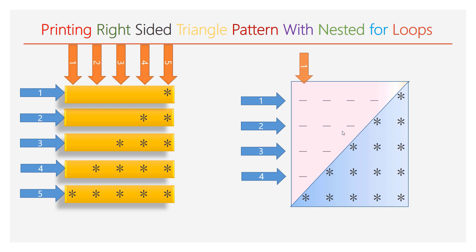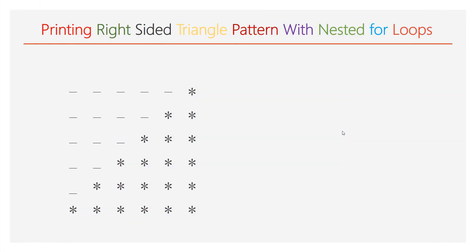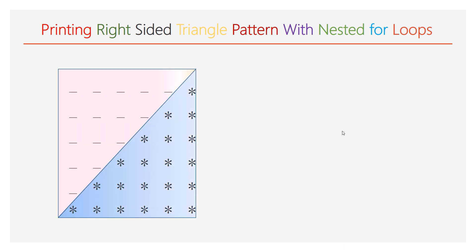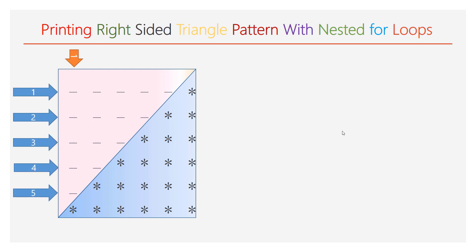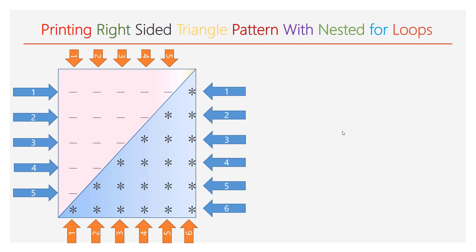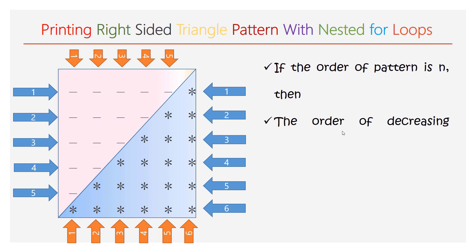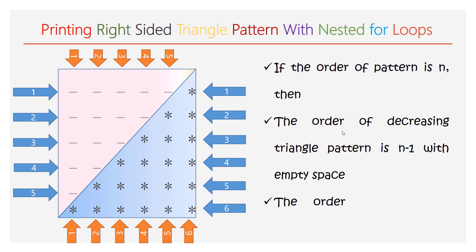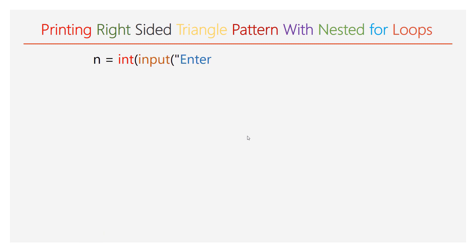The order of the first triangle is 4x4. Now let us see the same pattern with a different order — here the order is 6x6. We have a decreasing triangle and an increasing triangle. The order of the decreasing triangle is 5x5 and the order of the increasing triangle is 6x6. In general, if the order of the pattern is n, then the order of the decreasing triangle pattern is n minus 1 with empty space, and the order of the increasing triangle is n with characters. Here n is the order of the pattern.